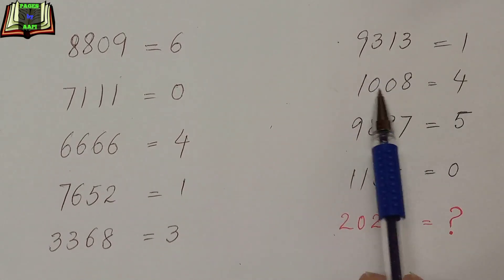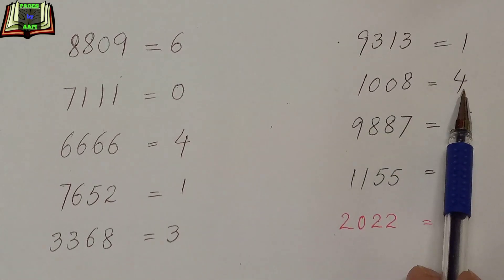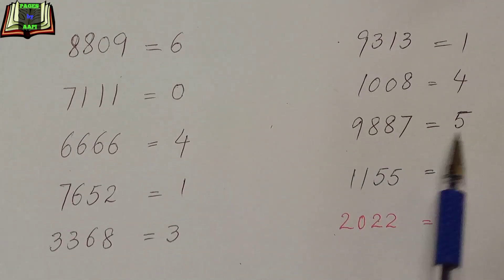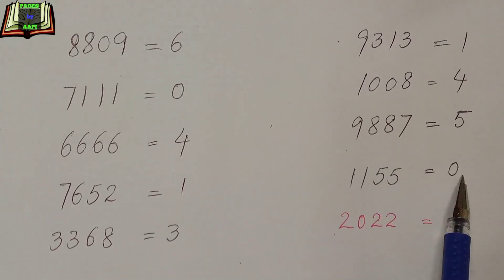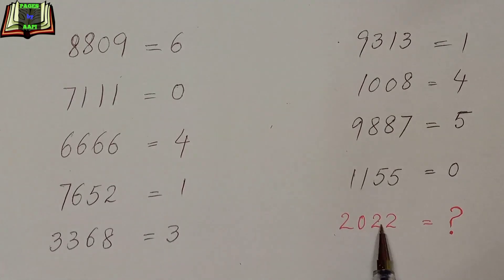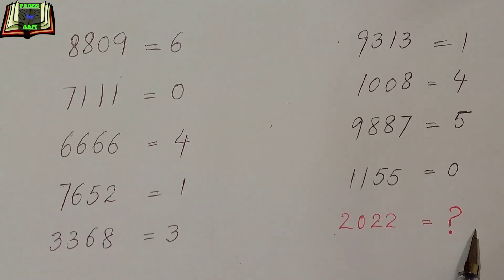9313 equals 1, 1008 equals 4, 9887 equals 5, 1155 equals 0. And 2022, we have to find out this number.